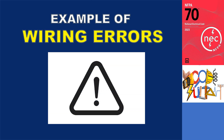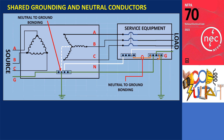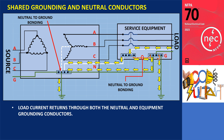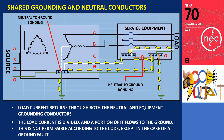Here are a few examples of wiring errors. Shared grounding and neutral conductors: in some wiring configurations, the grounding conductor and neutral conductor are shared or bonded together at multiple points. When the neutral is already bonded to the grounding terminal of the transformer and further bonded to the ground at the panel, a situation arises where the load current returns through both the neutral and equipment grounding conductors. As the grounding conductor is connected to all metal parts of the system, the load current is divided, and a portion of it flows to the ground. However, this is not permissible according to the code, except in the case of a ground fault.